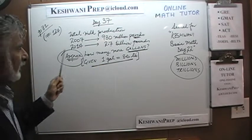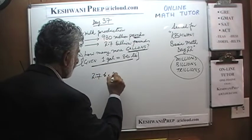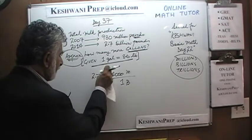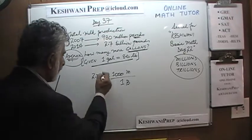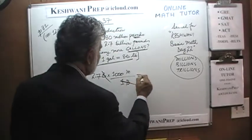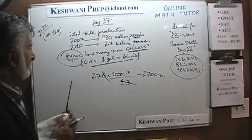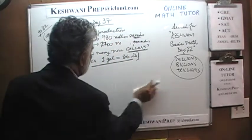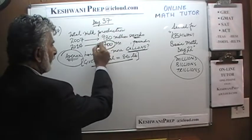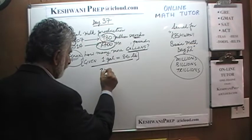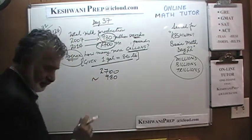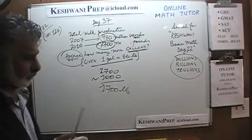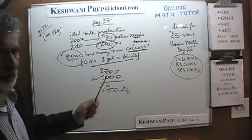First thing first: 2.7 billion pounds. We know there are 1,000 million in 1 billion, so 2.7 times 1,000 is 2,700 million. We have gone from 980 to 2,700 million. We are going to treat 980 as approximately 1,000, so the difference is 1,700 million pounds. All we have to do is convert 1,700 million pounds into gallons.